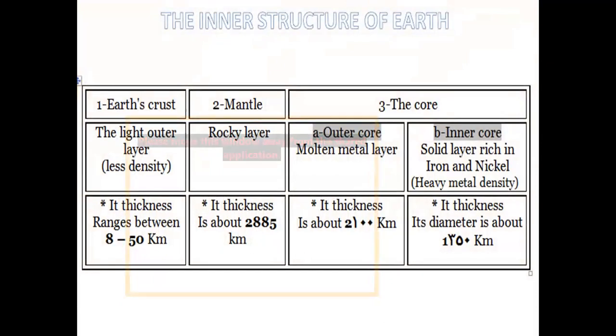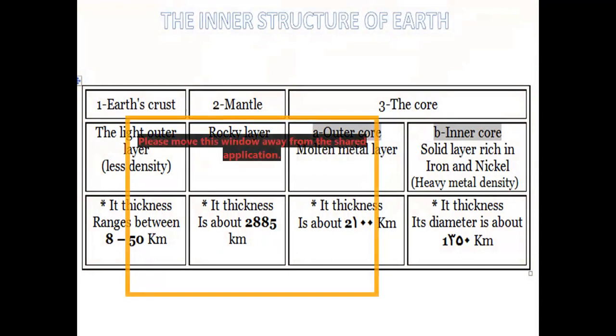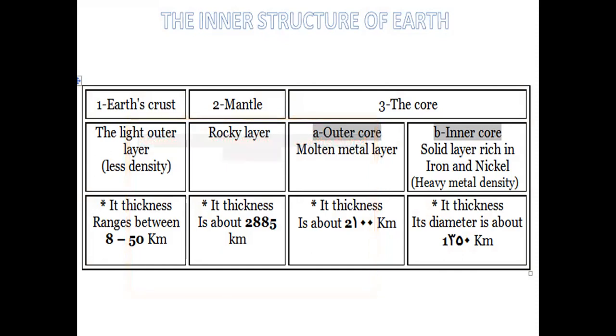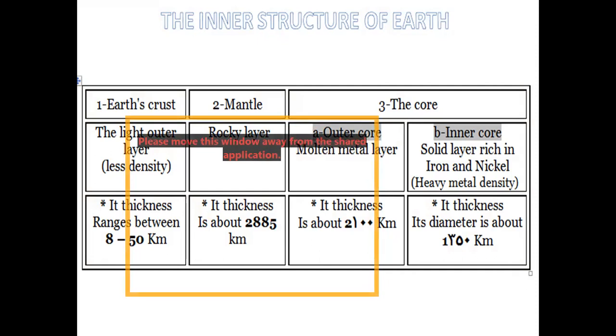Layers of planet Earth: The Earth is divided into three layers. Number one: Earth's crust. It's very light because it has low density. The nature of the Earth's crust: its thickness ranges between 8 to 50 kilometers.